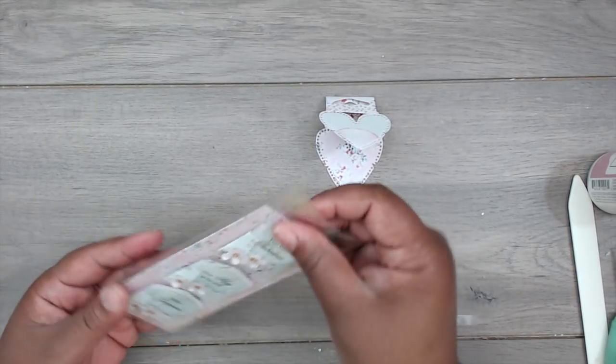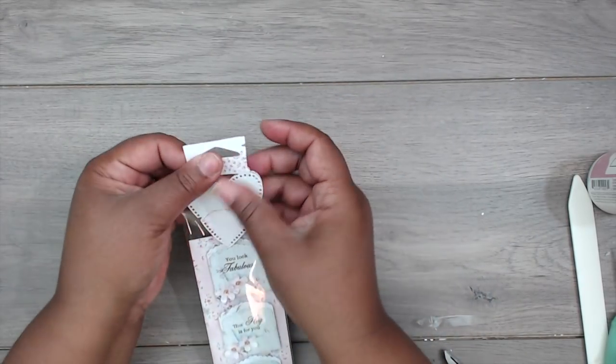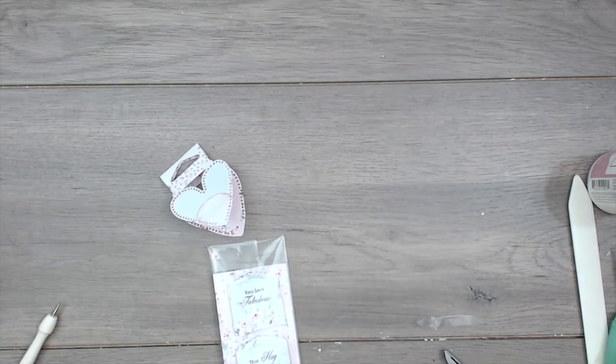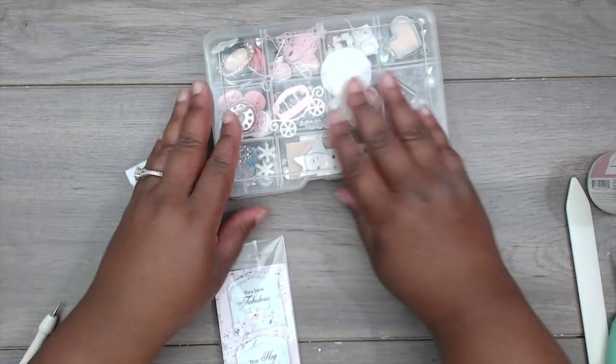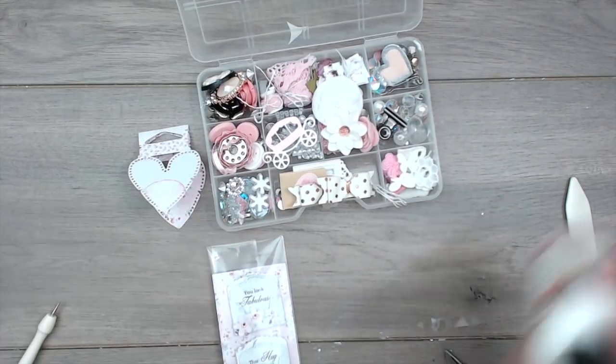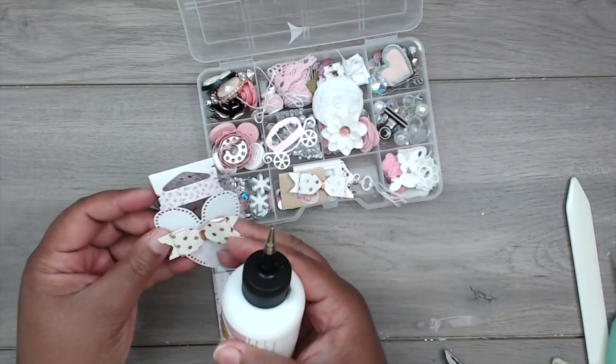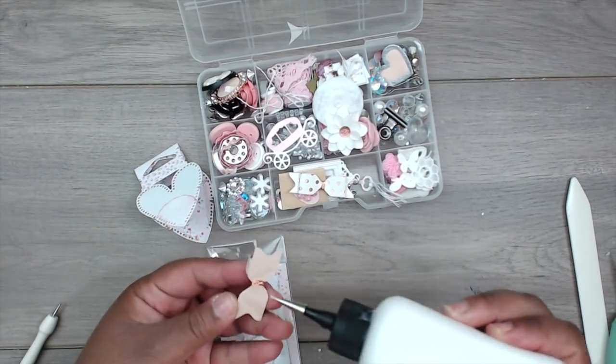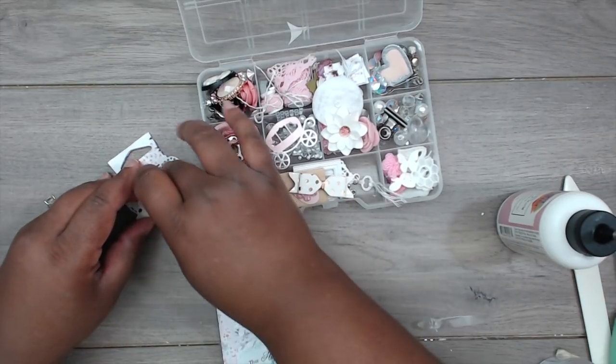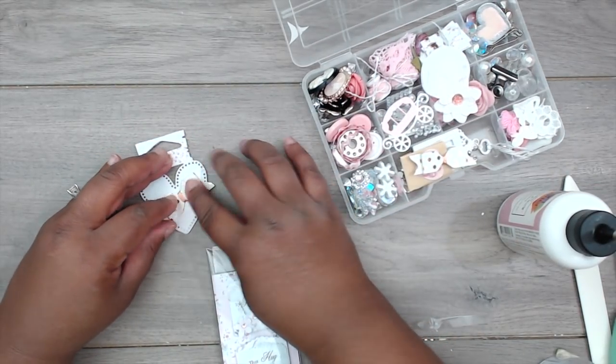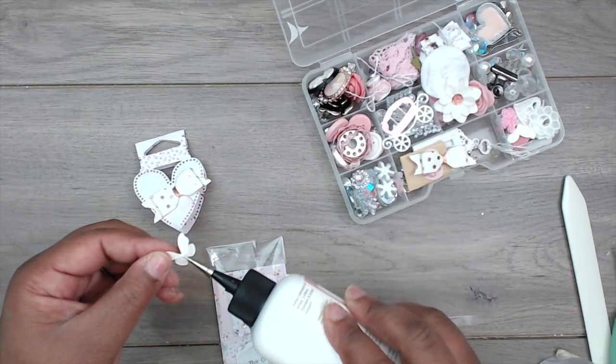That can go just like that, but I'm going to add embellishments to this using this embellishment box from the swap. I'm going to use this bow on the top here and this butterfly right in the middle.